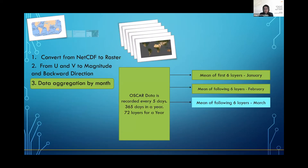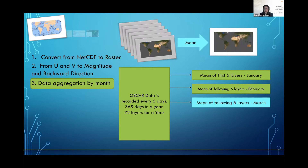The next step is data aggregation by month. The OSCAR dataset contains 72 layers recording the ocean current data for a year. In this project, these 72 layers of data for 2020 were aggregated to 12 raster layers, each layer representing the average velocity of that month. The average velocity of each month was calculated from the bands within that specific month.